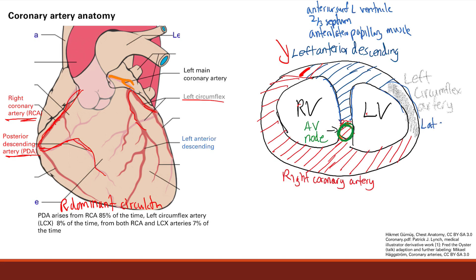It supplies the lateral side of the left ventricle, and it also supplies the anterolateral papillary muscle. So the anterolateral papillary muscle has innervation from both the left anterior descending as well as the left circumflex artery.